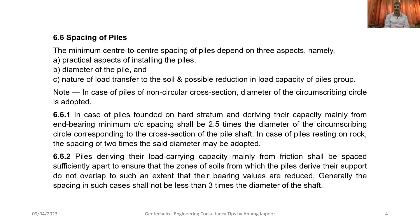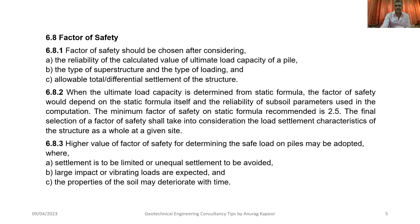As per clause 6.6.6.2 of this Indian Standard code, piles deriving their load carrying capacity mainly from friction — that is, friction bearing piles — should be spaced sufficiently apart to ensure that the zones of soil from which the piles derive their support do not overlap to such an extent that their bearing values are reduced. In general, center-to-center spacing of such piles should be three times the diameter of the shaft.